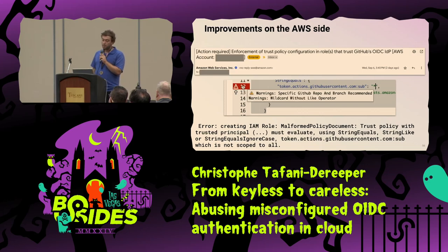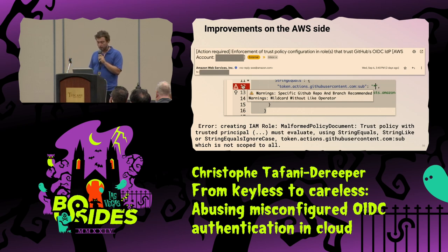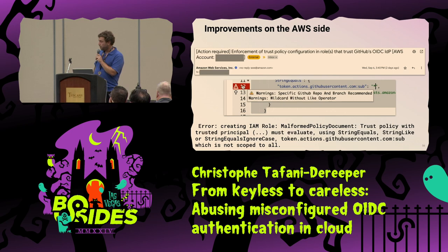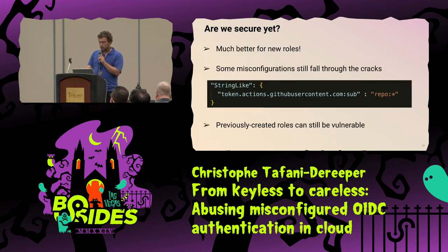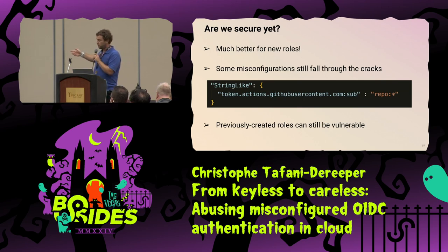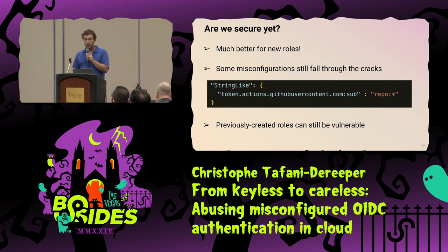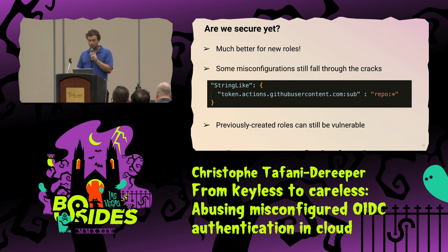AWS also sent an email to customers who had vulnerable roles, implemented a warning in the AWS console for insecure conditions, and changed the API for create role and update role policy to block requests with a vulnerable policy. That's great — it doesn't work all the time; for instance, if you use 'repo:*' it doesn't block it. Previously created roles haven't been automatically cleaned up, so they might still be out there.